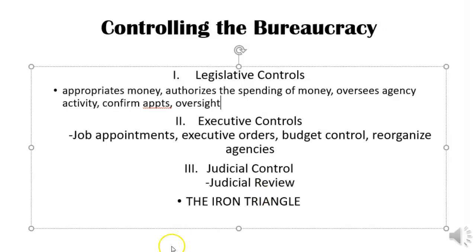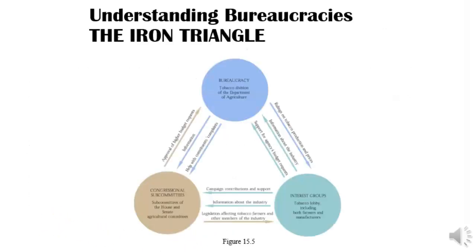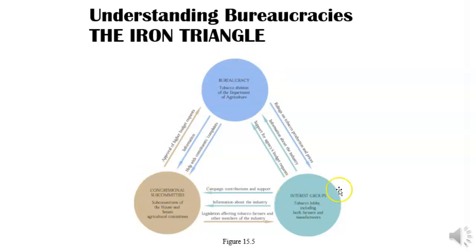The final thing is something known as the Iron Triangle — basically an answer to how public policy is made in the United States. Laws are basically created by the relationship between the bureaucracy, Congress and its committees, and interest groups. These three groups have such a strong relationship to each other that they've created what is called the Iron Triangle.